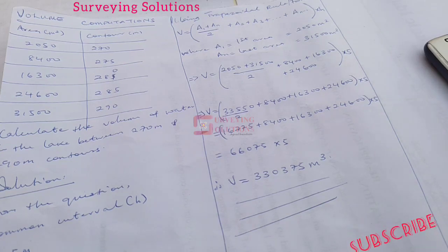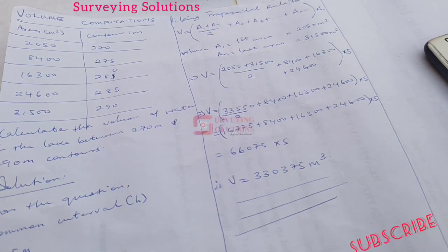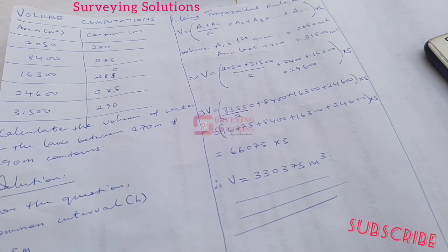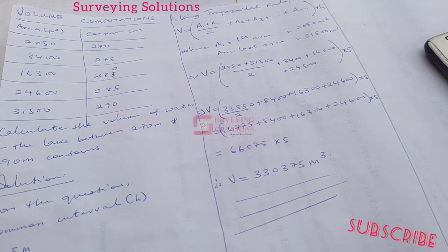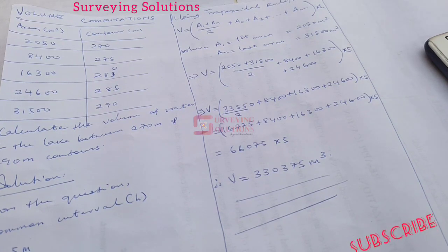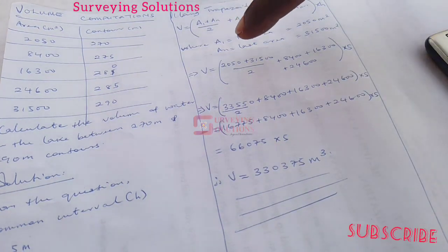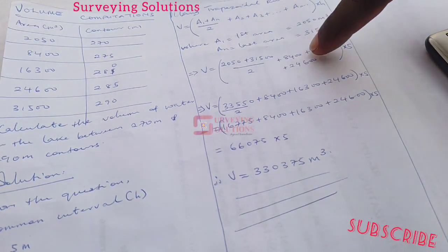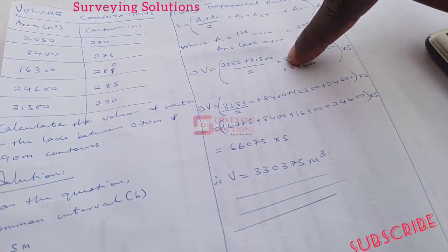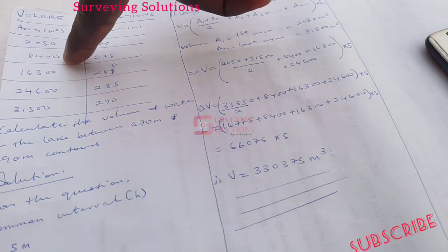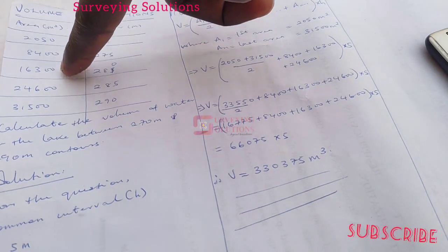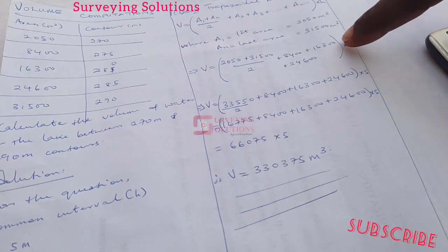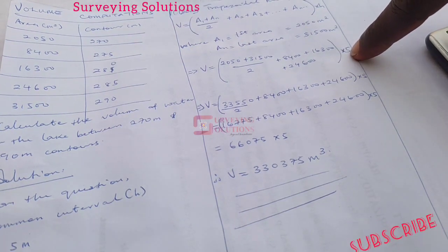So substitute it and then plus the other areas. That means we have A2 plus A3 plus A4 plus A5 until you get to AN minus 1. That means the last value minus 1. When we substitute the values, we have 2050 plus 31,500 divided by 2. Then plus the other areas, which you can see at this point: 8,400, 13,600, then 24,600. So these are the other values. Times the common interval, this h. It's actually very important in the formula. Times the common interval, which is this h.